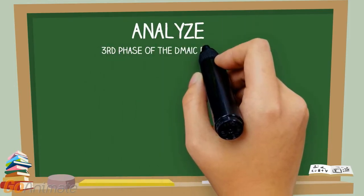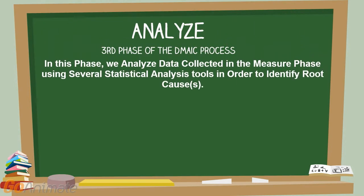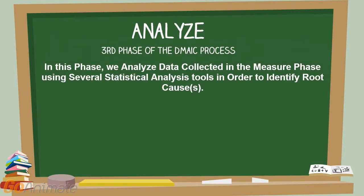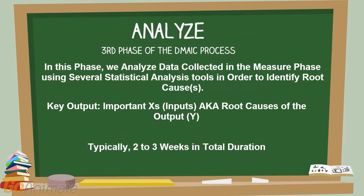Analyze is the third phase of the DMAIC process. In this phase, we analyze the data collected in the Measure Phase using several statistical analysis tools in order to identify root causes — key output important Xs (inputs), also known as root causes of the output Y. Typically, the Analyze Phase is two to three weeks in total duration.